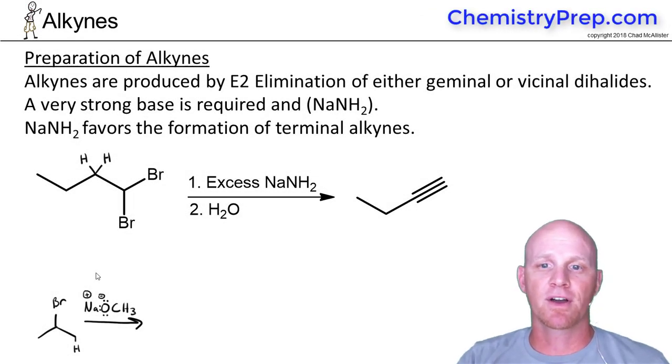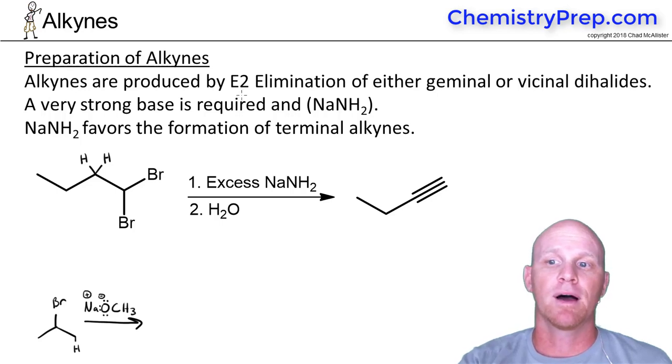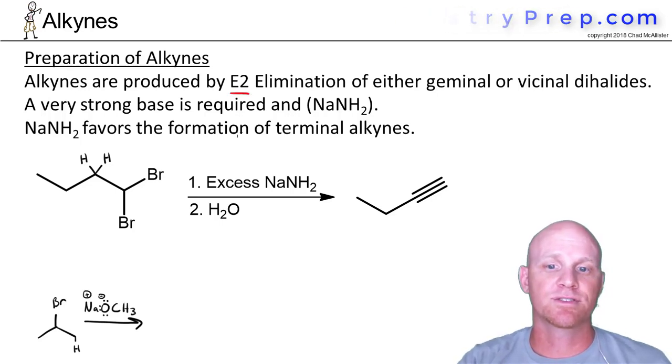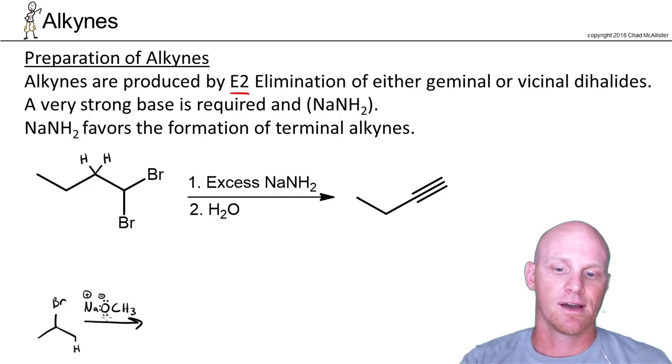Now the next thing we're going to focus on is the preparation of alkynes. Alkynes are just made by E2 elimination, and we saw we made alkenes with this. As a reminder, with E2 elimination we'd have a nice strong base.